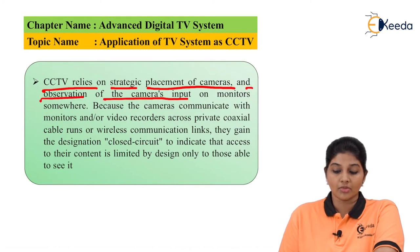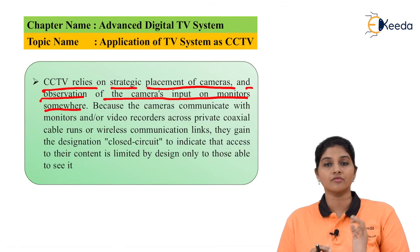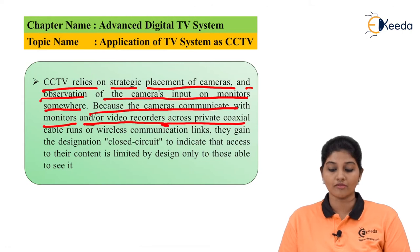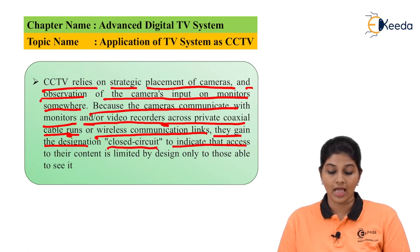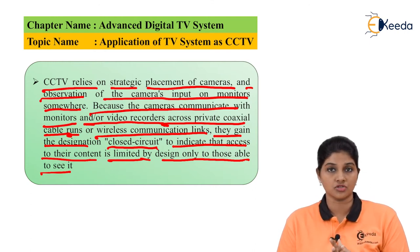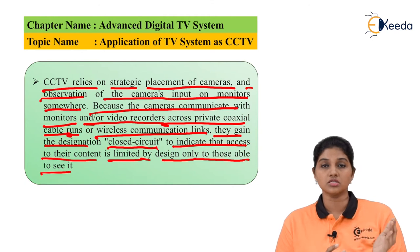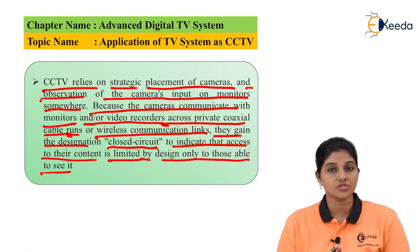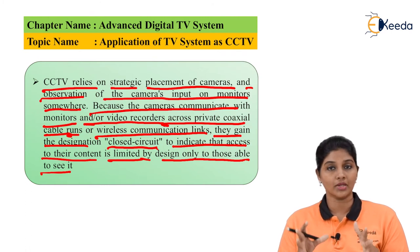CCTV relies on the strategic placement of cameras and observation of the camera's input on a monitor located somewhere else. The output of the CCTV is given to monitors at a different location from where the camera is installed. The camera communicates with the monitor or video recorder across a private coaxial cable or wireless communication link, which gives it the designation 'closed circuit', indicating that access to the content is limited only to those able to see it.